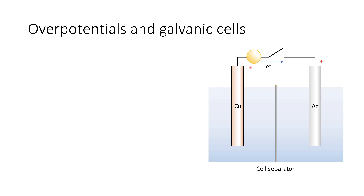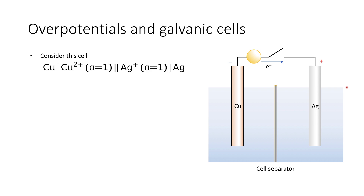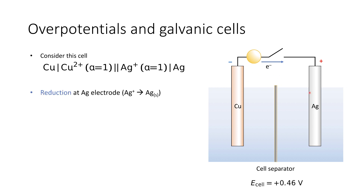We're going to first look at galvanic cells. A galvanic cell is one where we simply put electrodes into the electrolyte and the cell potential drives electrons through the external circuit. Consider a cell where we have copper and silver present. The cell potential under standard conditions would be about plus 0.46 volts. Under galvanic conditions, we would expect reduction at the silver electrode — silver ions being reduced to silver metal — and oxidation at the copper electrode, with copper metal going into solution as copper ions.